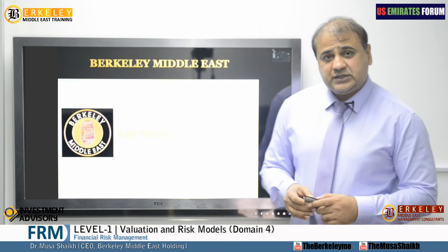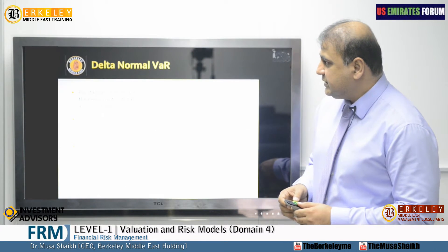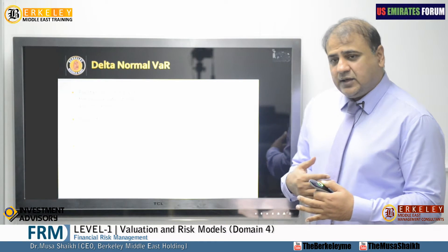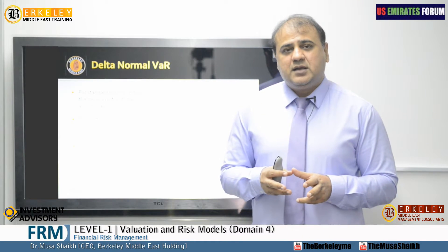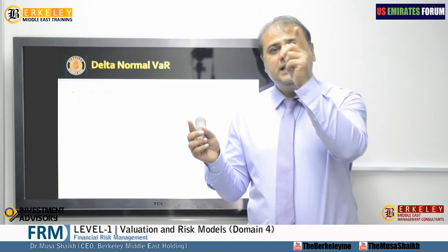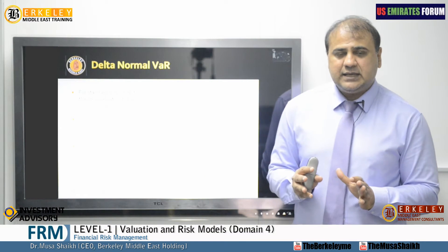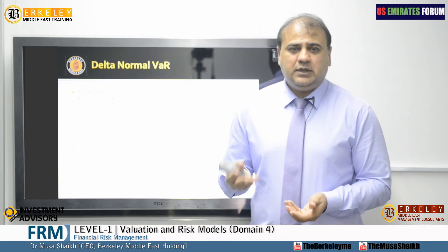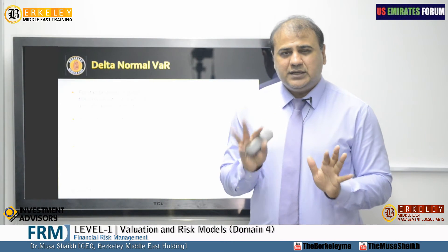We will start with value at risk methods and see the concept of delta-normal and how it works. Statistical methods are always followed by a binomial distribution — it is like a bell-shaped distribution. Those with a statistics background can easily understand. We have mean, median, and mode, and we need to discuss what these are and what the bell-shaped distribution represents.